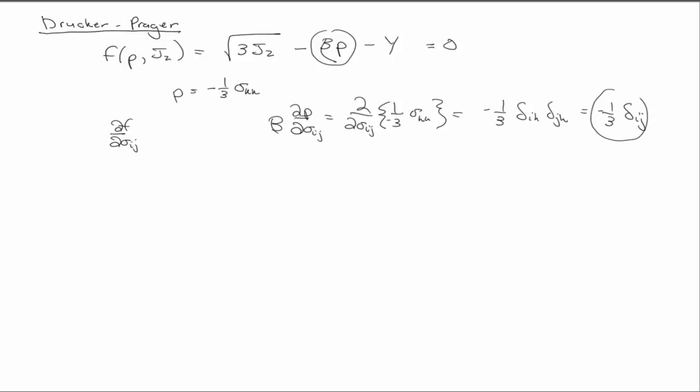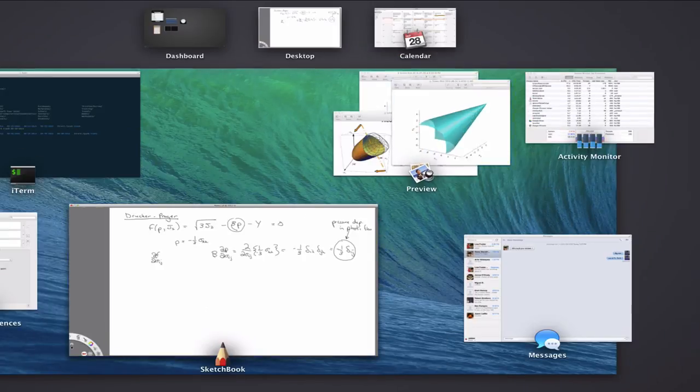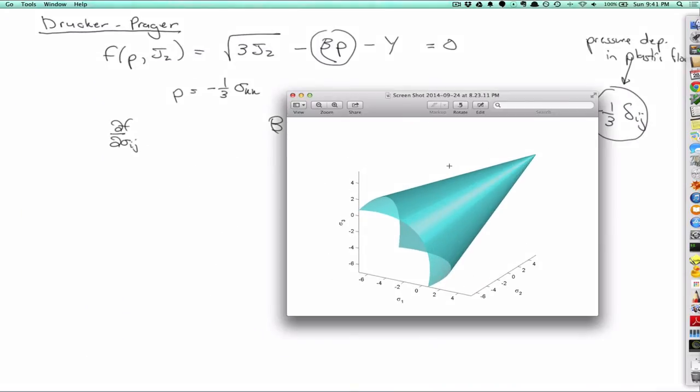And so this term that would show up in the flow rule indicates a pressure dependence in the plastic flow. And so then a picture of what this looks like—I took this picture from Wikipedia.